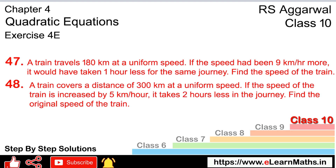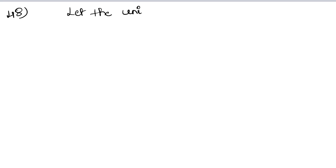Let's do the next question. Question number 48: a train covers a distance of 300 km at a uniform speed. If the speed of the train is increased by 5 km per hour, it takes 2 hours less for the journey. Find the original speed of the train. Let the uniform speed of the train be x km per hour.